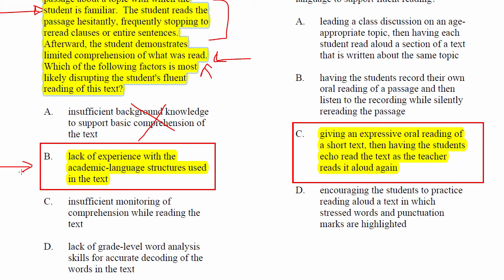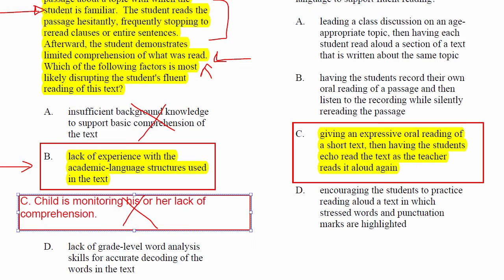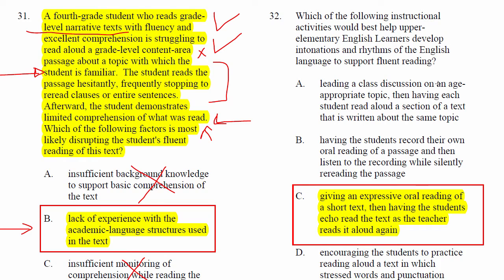B is the correct response — it's the structure of the text that's difficult. If you look at C, insufficient monitoring of comprehension while reading the text — that's out because this child is in fact monitoring. The child is monitoring his or her lack of comprehension. And D, lack of grade-level word analysis skills for accurately decoding the text — that's not the problem either, because the child is going back and looking at full clauses and full sentences. It's not a word-level problem; it's a schema problem.